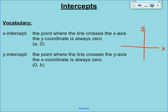A y-intercept is just kind of the opposite — that's the point where the line crosses the y-axis. If you think about any point on the y-axis, the x-coordinate is always 0, so generically we call the y-intercept (0, B). This should sound familiar because when we talked about slope-intercept form, B stood for the y-intercept, so here you can see that connection.